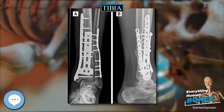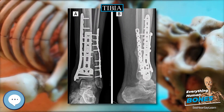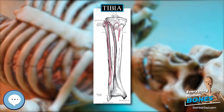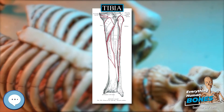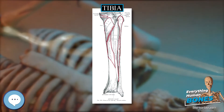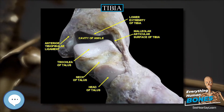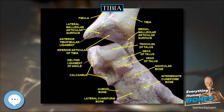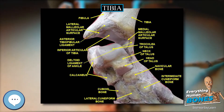The upper surfaces of the condyles articulate with the femur to form the tibio-femoral joint, the weight-bearing part of the knee joint. The medial and lateral condyle are separated by the intercondylar area, where the cruciate ligaments and the menisci attach. Here the medial and lateral intercondylar tubercle forms the intercondylar eminence.